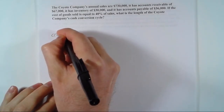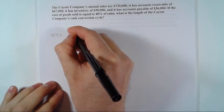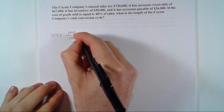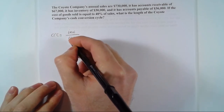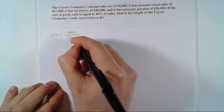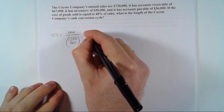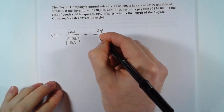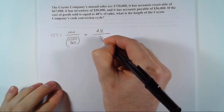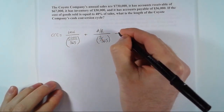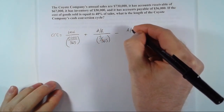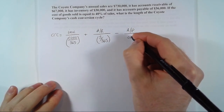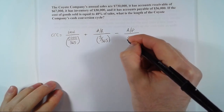The formula is: the cash conversion cycle equals inventory divided by (cost of goods sold / 365), plus accounts receivable divided by (sales / 365), minus accounts payable divided by (cost of goods sold / 365).